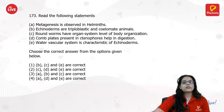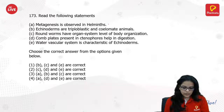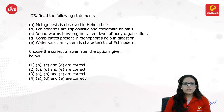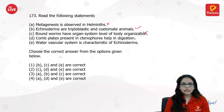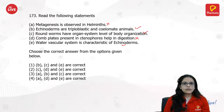Read the following statements and choose the correct options: Metagenesis is not observed in helminths — it is mostly found in arthropods. Echinoderms are triploblastic and coelomate — yes. Roundworms have an organ system level of body organization — yes, that is where organization starts. Comb plates are not for digestion. Water vascular system is a characteristic of echinoderms — yes. So B, C and E are correct.